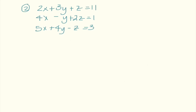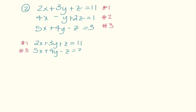Here's example number 2. I think the y's would be easy, but I'm going to focus on canceling out the z's this time. Once again, I'm going to label these equation 1, equation 2, and equation 3. The first thing I'm going to do is work with equations 1 and 3, because when I look at them, my z's are already opposites. 5x plus 4y minus z equals 3. I can just combine these right away and I get 7x plus 7y — my z's cancel out — equals 14.